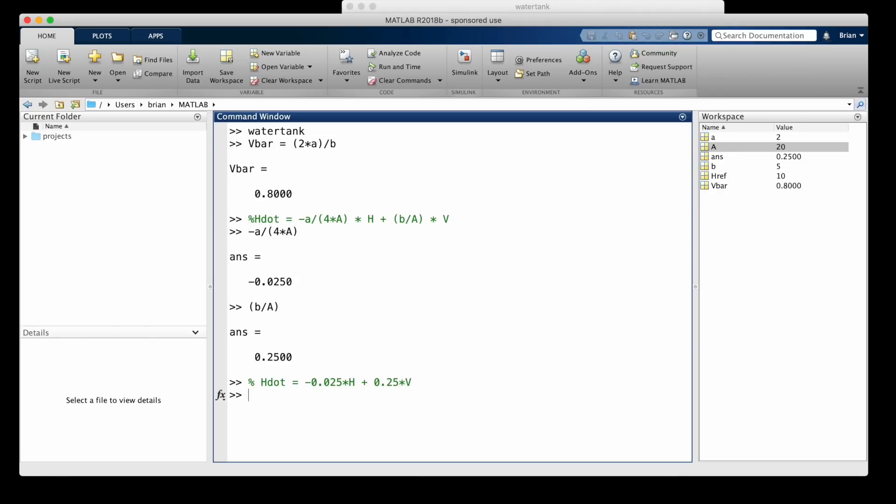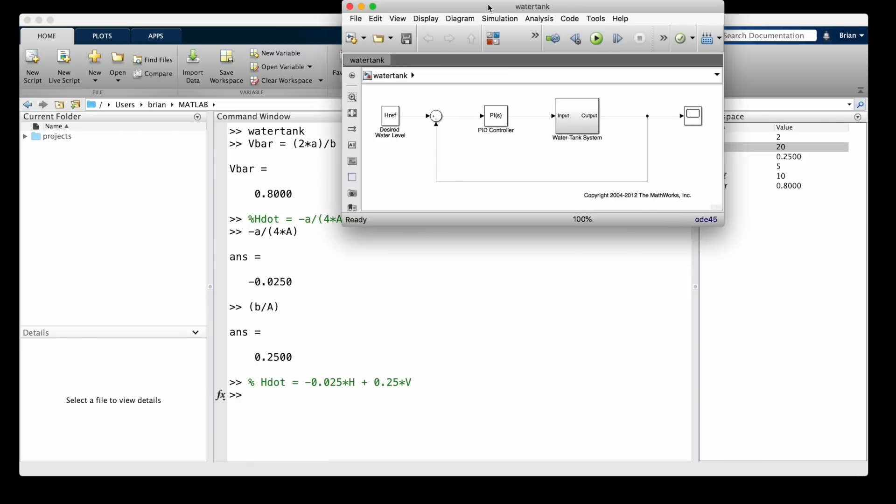We're going to do this in two parts. First we'll trim the system at the operating point h-bar equals 4, and second we'll linearize at that steady state condition.